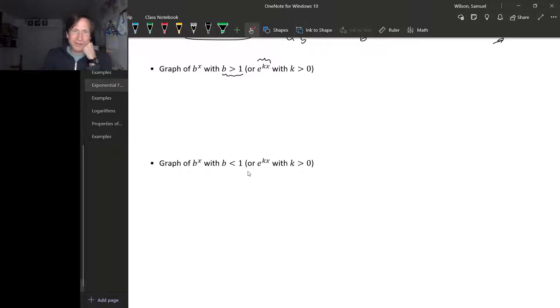The second flavor of exponential functions is when b is less than 1. Remember, b has to be bigger than 0, so we're talking about b between 0 and 1. And the corresponding thing for k is that k is negative.